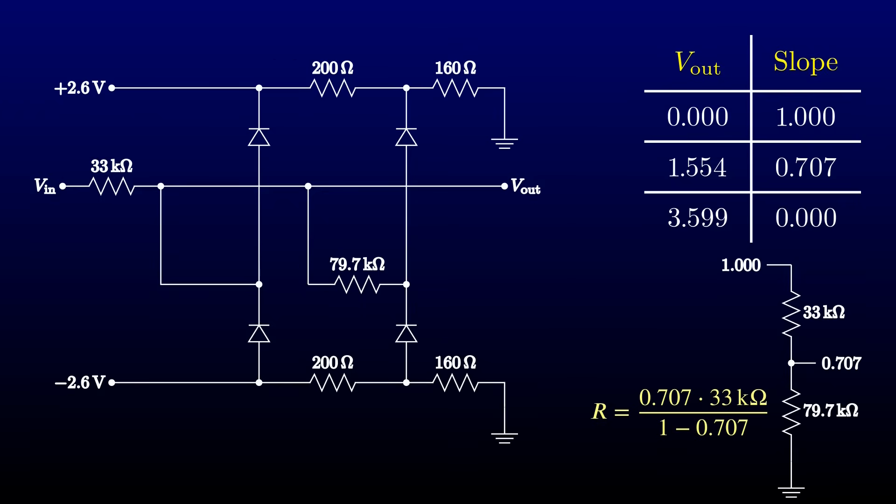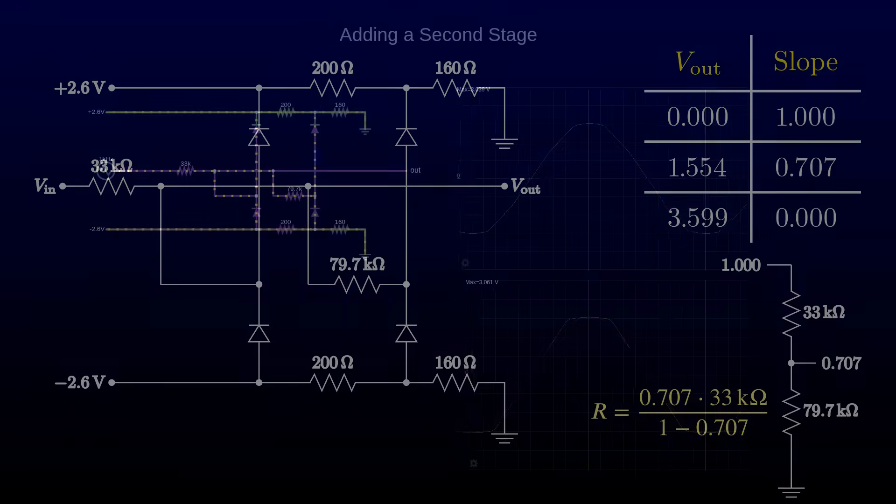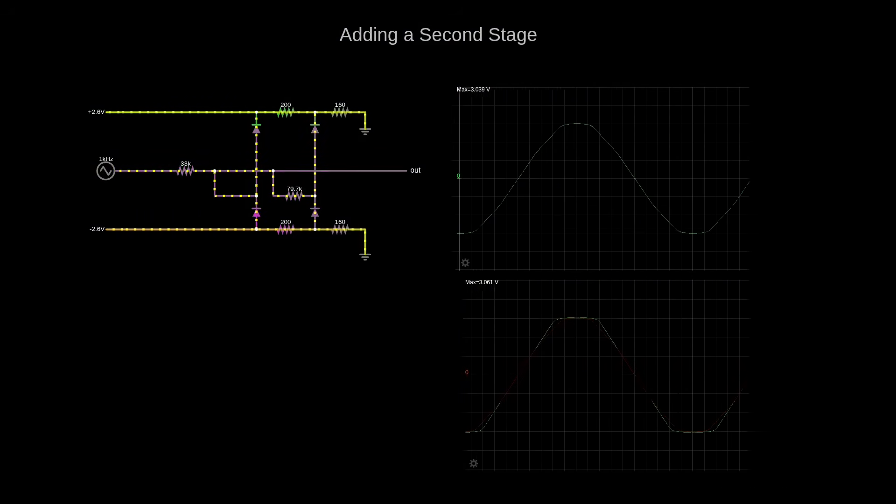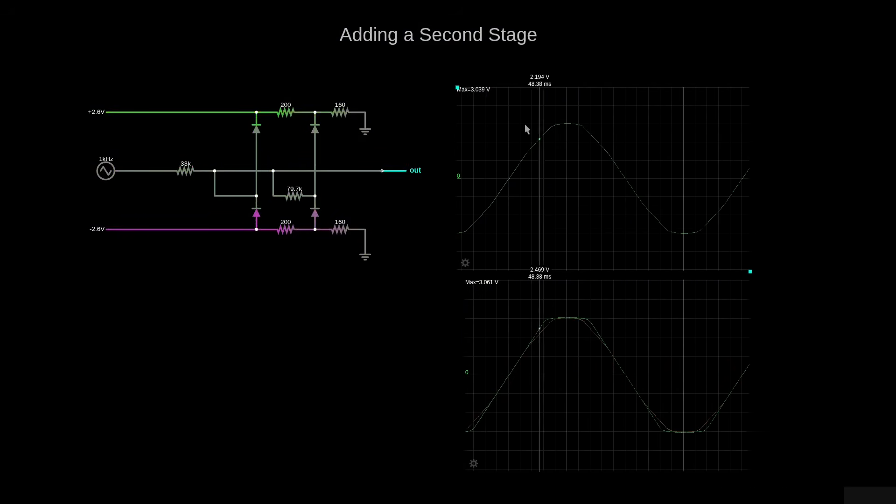And now we have something that we can try simulating again. Yeah, it's definitely somewhat more sine-like. If you squint just right, you can see a little bit of a corner at an output voltage of around a volt and a half, where the slope abruptly decreases. It's easier to see in the bottom trace, where the one-stage and two-stage circuits are compared.